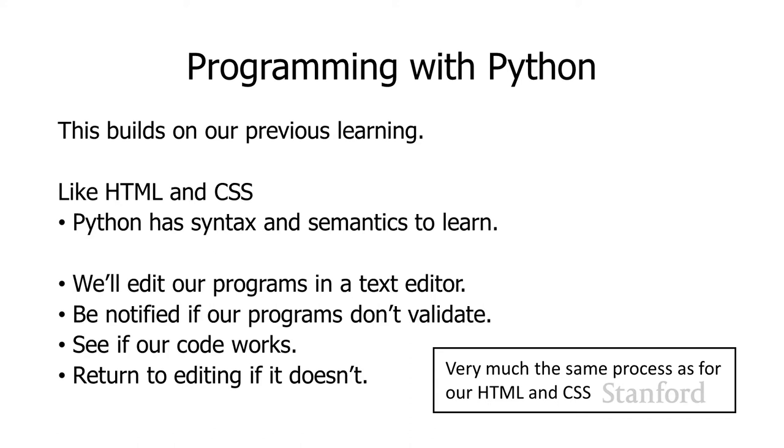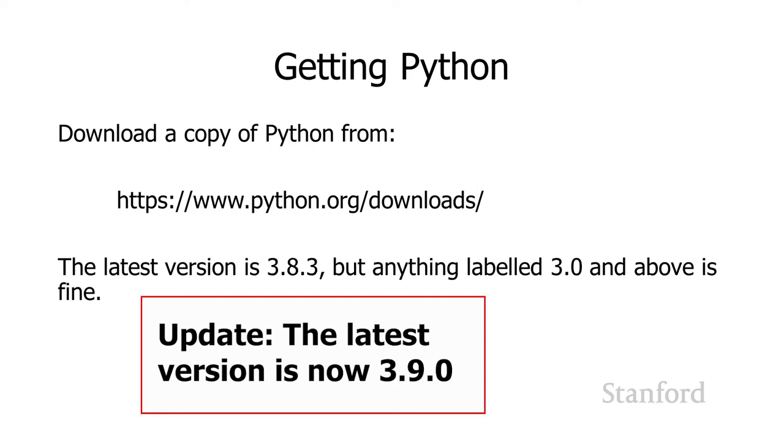To get a copy of Python, go to www.python.org and go to Downloads. The latest version is 3.8.3, and that's what should be at the download link. But anything labeled 3.0 and above is fine. If you've already got it on your computer or maybe you're sharing a computer with a roommate, anything with 3.0 and above is fine. Anything with 2 point something actually has different syntax rules, so you don't want to use those.